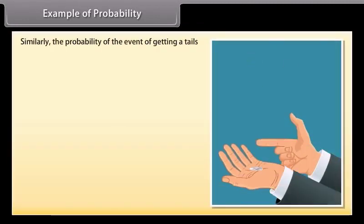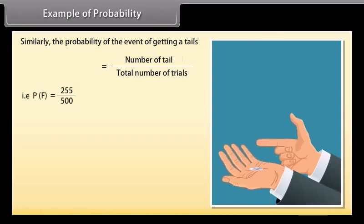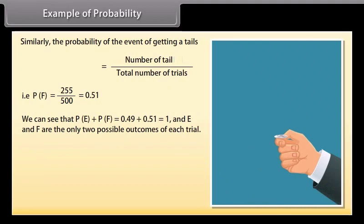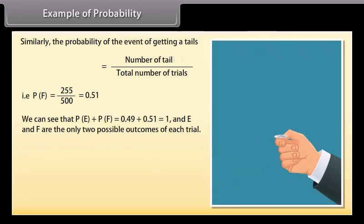Similarly, the probability of the event of getting a tail equals number of trials upon total number of trials. That is, P(F) equals 255 upon 500, which equals 0.51. We can see that P(E) plus P(F) equals 0.49 plus 0.51, which equals 1. And E and F are the only two possible outcomes of each trial.